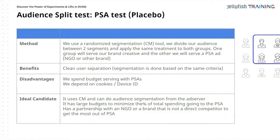We spend the budget serving with the charity test or public service announcements, and we depend on cookies and device IDs — that's a disadvantage. The ideal candidate uses Campaign Manager, so you can suggest this to clients. You can do audience segmentation from the ad server — not just from the DSP. It's conducted with campaigns that have a fair amount of spend, and the client would have a partnership with an NGO or non-competing brand so comparisons aren't contaminated.